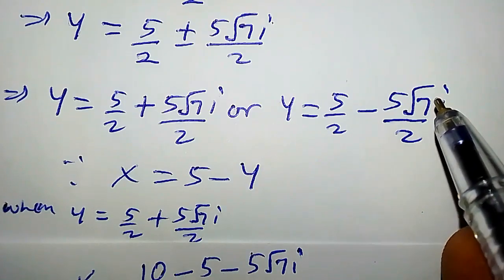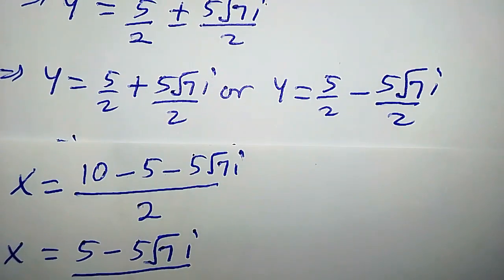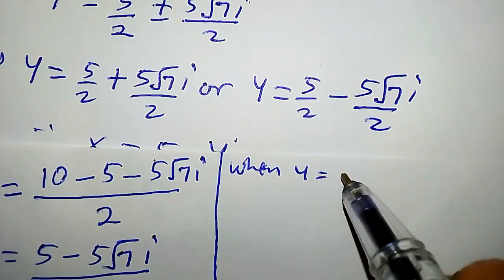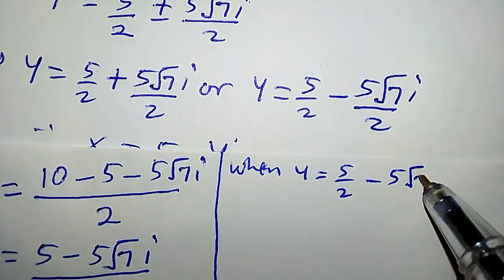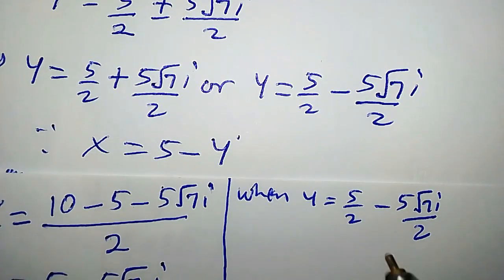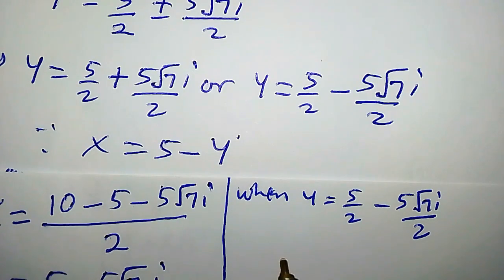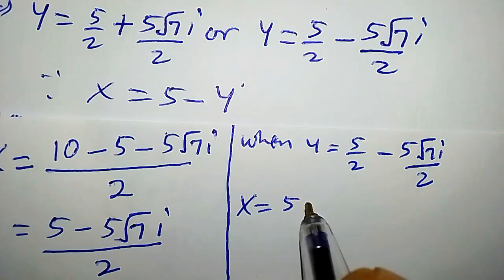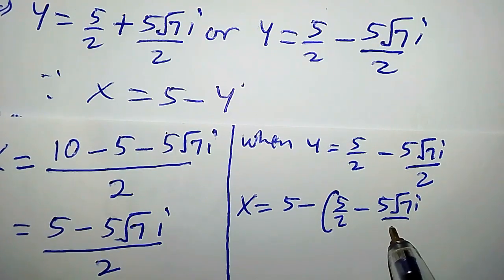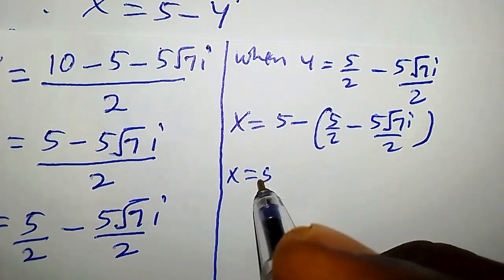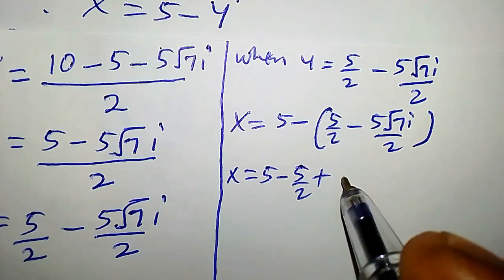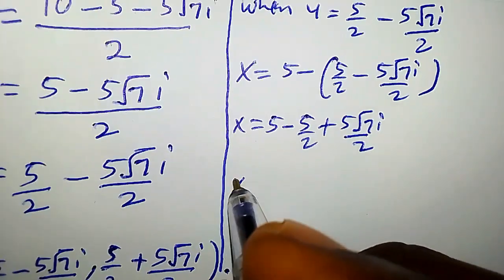When y is equal to 5 over 2 minus 5 root 7i over 2, what we need to do is plug this value into x equals 5 minus y. So we have x equal to 5 minus (5 over 2 minus 5 root 7i over 2), which gives x equal to 5 minus 5 over 2, and minus times minus gives plus 5 root 7i over 2.